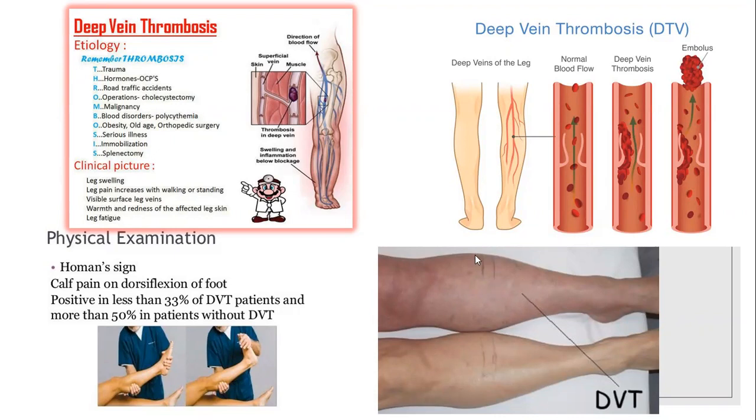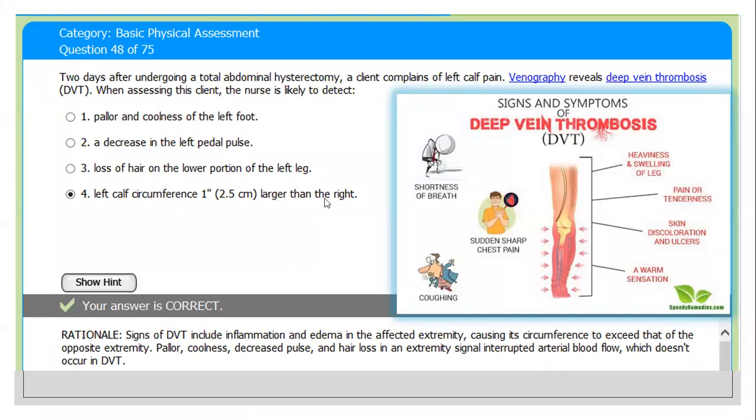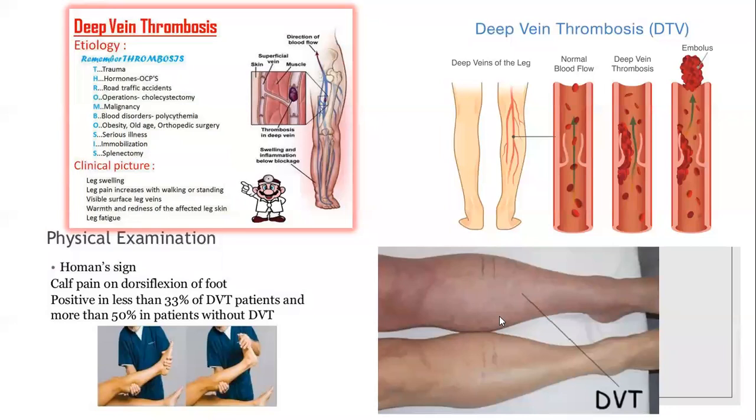In this picture, the affected leg circumference is larger than the right. One is bigger, larger. As I told you, deep vein thrombosis occurs when a blood clot or thrombus formation or embolus formation - blood clots form in one or more of the deep veins, usually more common in legs. Deep vein thrombosis can cause leg pain or swelling, but also can occur with no symptoms.